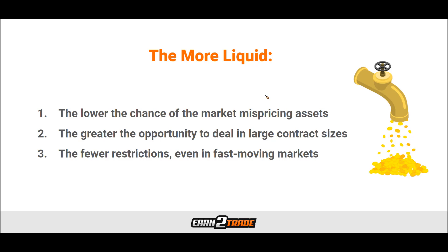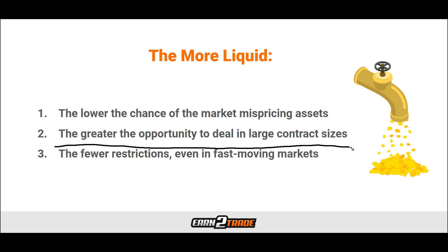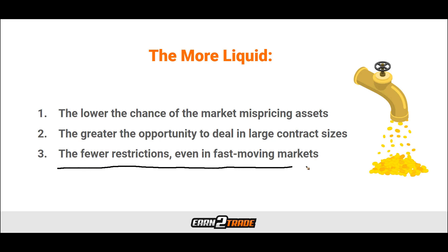Investment indices such as the e-mini S&P 500 are so liquid and volatile that they generally make a very nice place to investigate the Butterfly Spread strategy. The perfect opportunity to create several Butterfly Spreads is generally going to be tied to more liquid markets — that is the most important thing we usually want to look for. The lower chance of market mispricing assets is one quality that a liquid market has that is good for Butterfly Spreads. Also, the greater opportunity to deal in large contract sizes is another benefit, and fewer restrictions even in fast-moving markets exist with very liquid markets.